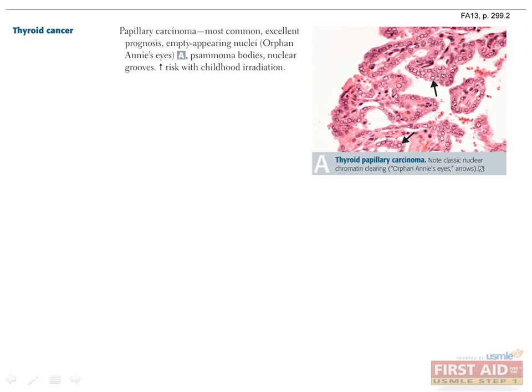Thyroid cancer can be a complex topic, but for this exam you just need to know the basics. Papillary thyroid carcinoma (PTC) is by far the most common type of thyroid cancer. It carries an excellent prognosis — it is usually a disease that people die with rather than die of. It has been associated with having received radiation to the neck during childhood. On histology, the key features are empty-appearing nuclei reminiscent of orphan Annie eyes, psammoma bodies (round collections of calcium), and nuclear grooves. Psammoma bodies are also found in papillary renal cell carcinoma, papillary ovarian serous cystadenocarcinoma, meningiomas, mesotheliomas, and prolactinomas.